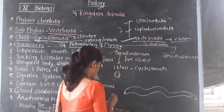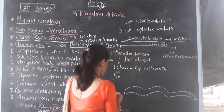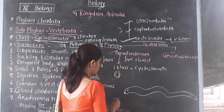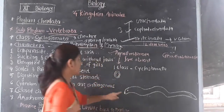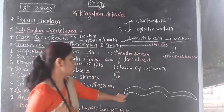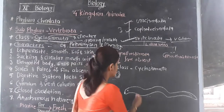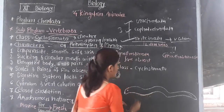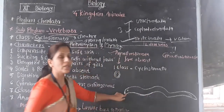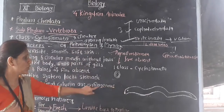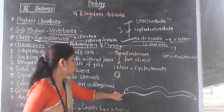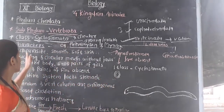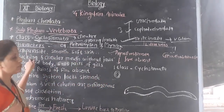The body of Cyclostomata is elongated. Here a circular mouth is present, and this circular opening is useful for sucking.